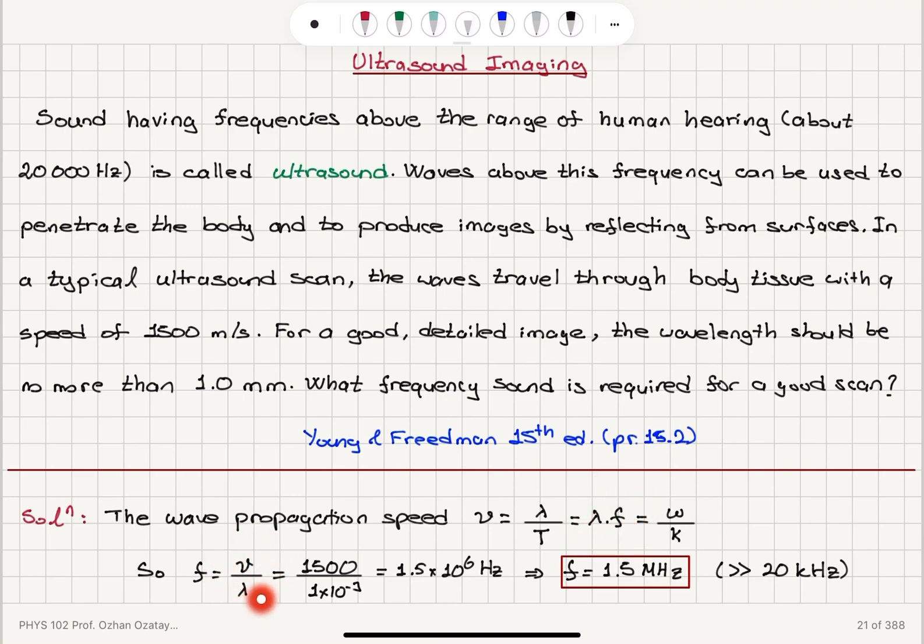So, frequency is propagation speed divided by lambda. 1 millimeter, we have to convert to meter, 1 times 10 to minus 3 meter. And this turns out to be 1.5 megahertz, way above the range of frequencies that the humans can detect.